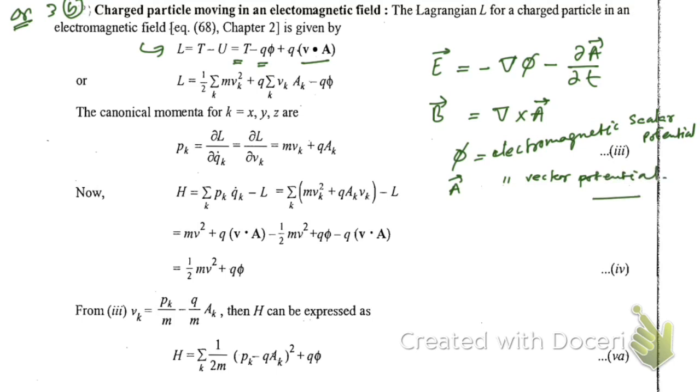Now instead of writing in vector form, if we consider a particular component k, so k means it may be x, y, z. If the velocity is vk, then we can write kinetic energy as half m vk square, summing up all components. Similarly here, using this part, this part is written first, which is q summation sum over k vk and ak, and this q phi is written here. So don't be confused.